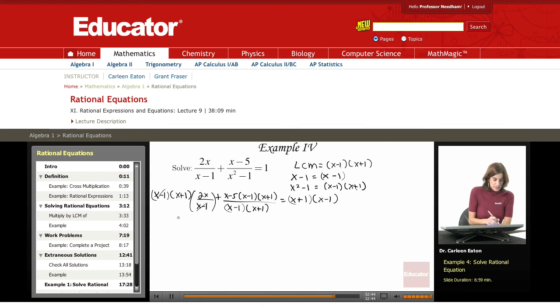The x minus 1s cancel. I'm going to be left with 2x times x plus 1. Here, they all cancel. So since everything was canceling, I'm just going to have an x minus 5 left. But it's good to write it out so you can see exactly what's happening.